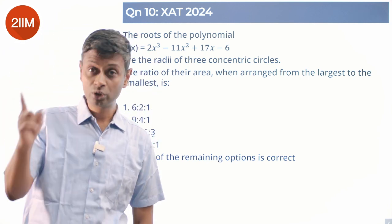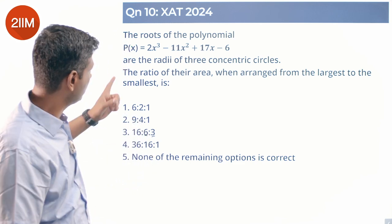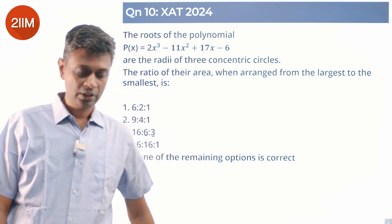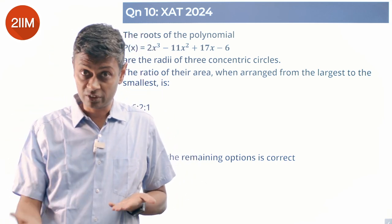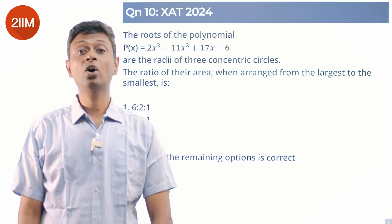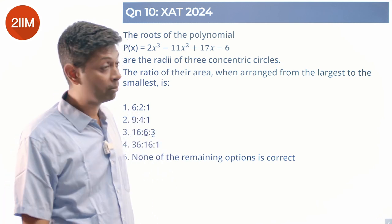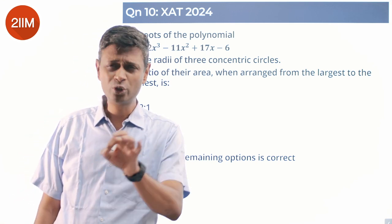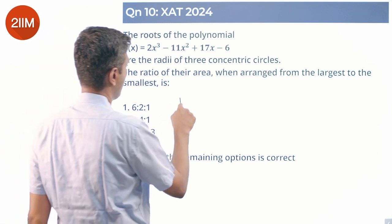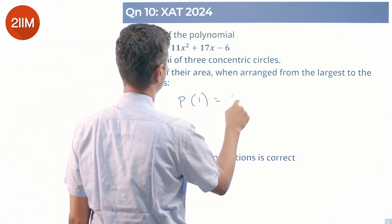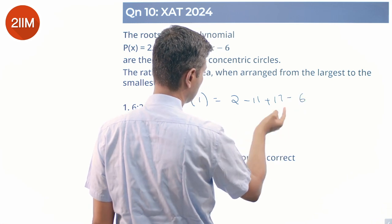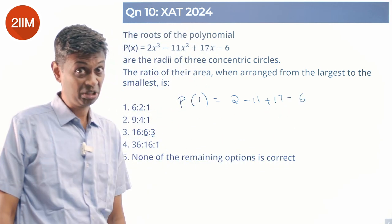If 1 were a root, then x = 1 will satisfy this. Factorizing, x - 1 will be a factor. P(1) should be 0. Does 1 satisfy this? P(1) = 2 - 11 + 17 - 6 = 2. Doesn't work, 1 doesn't work. But not shutting down the door because 1/2 could work or a larger number could work.